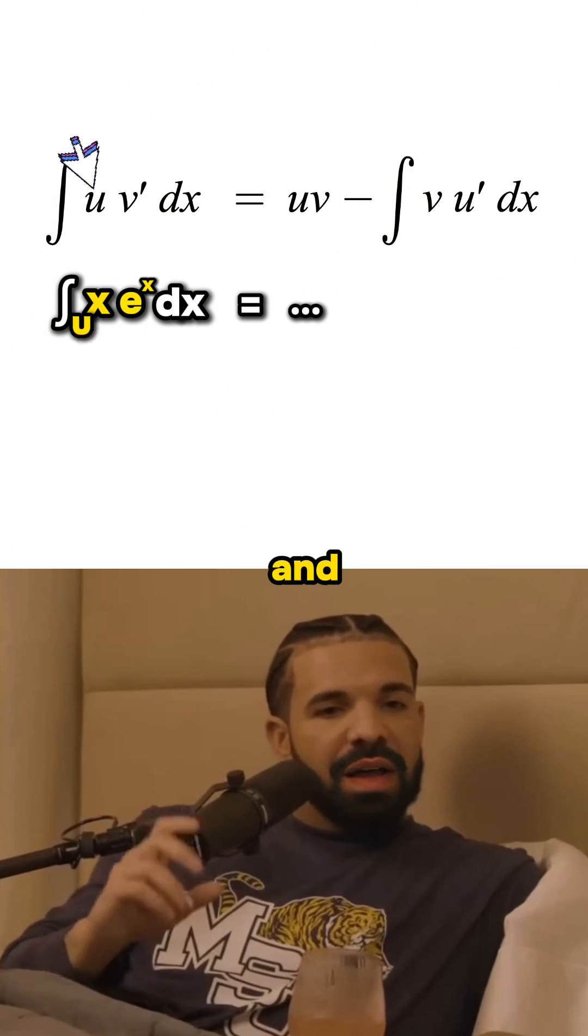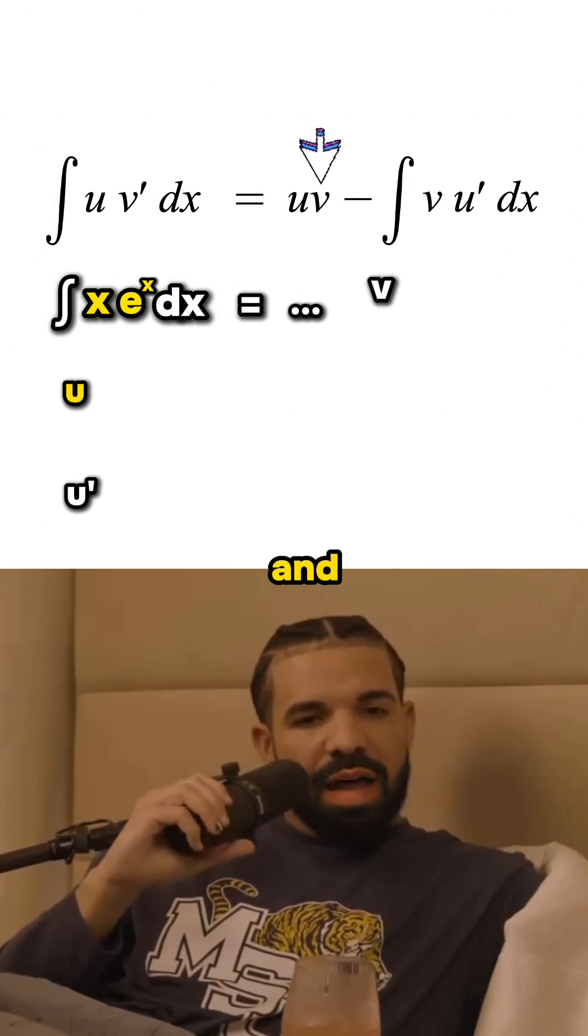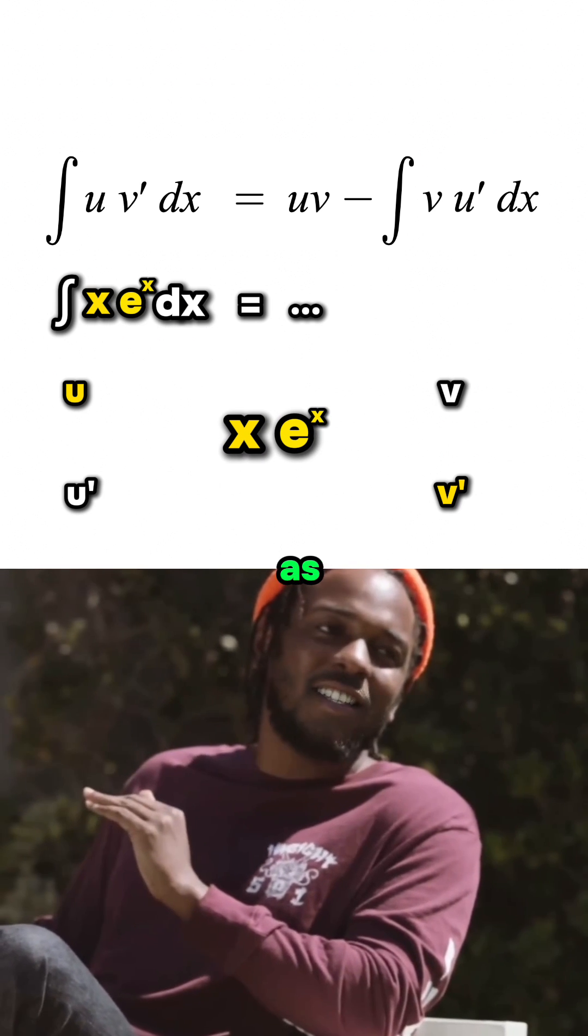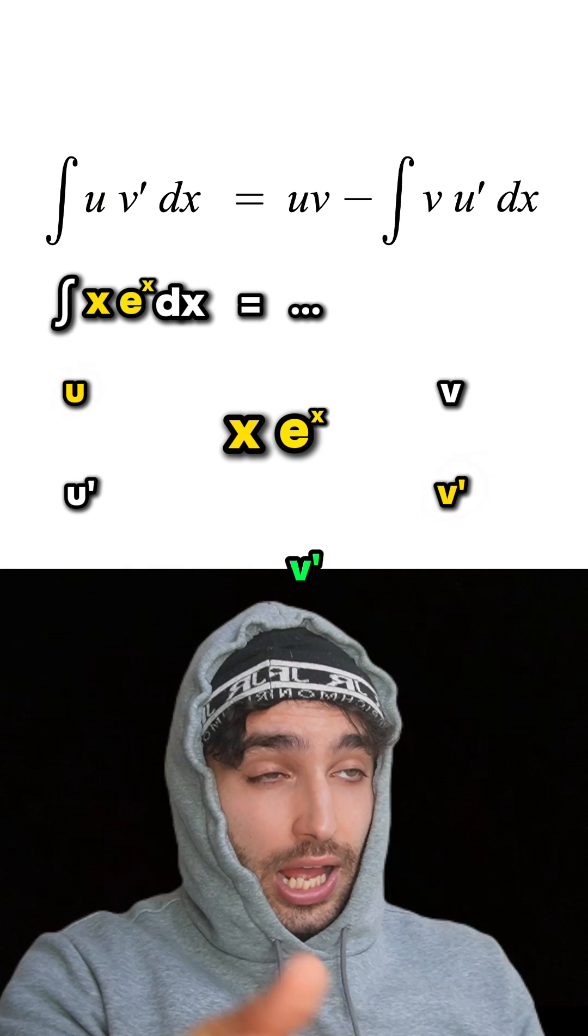And to complete it we need u and its derivative u prime, then v and its derivative v prime. So to start we need to label x and e to the x as either u or v prime. How do you decide which is which?